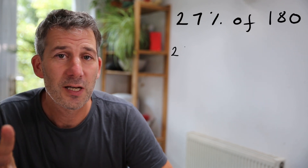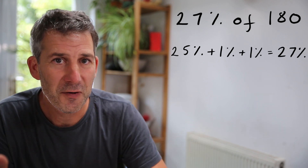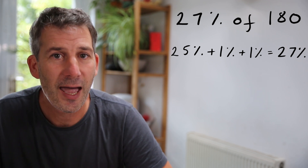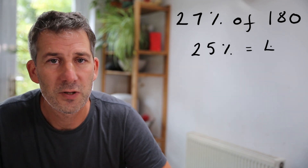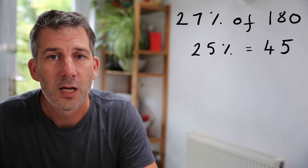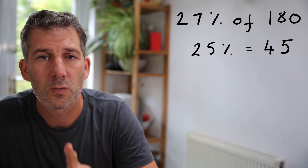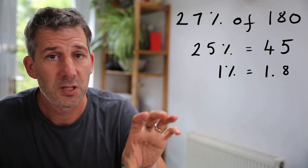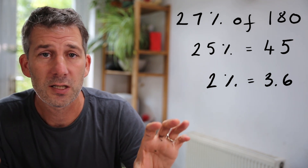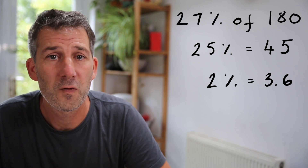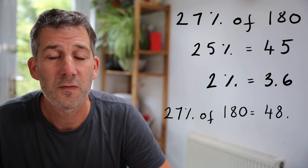If you want to find twenty-seven percent of something — say twenty-seven percent of one hundred and eighty — you can find twenty-five percent and then add on one percent and another one percent, because twenty-five plus one plus one is twenty-seven. Twenty-five percent of one hundred and eighty: halve to get ninety, halve again to get forty-five. One percent of one hundred and eighty is one point eight, and I want two of those, so three point six. Adding forty-five and three point six gives forty-eight point six. So twenty-seven percent of one hundred and eighty is forty-eight point six.